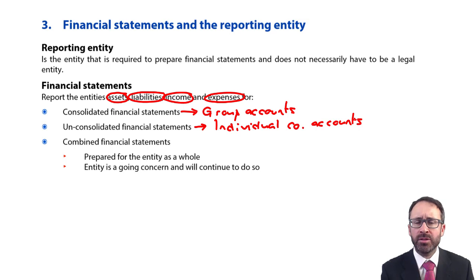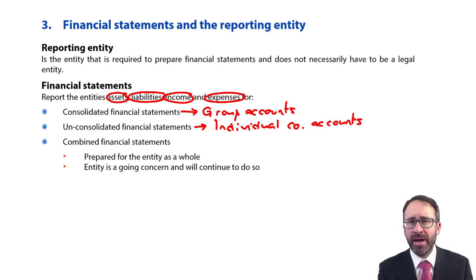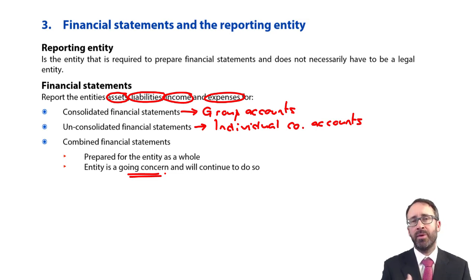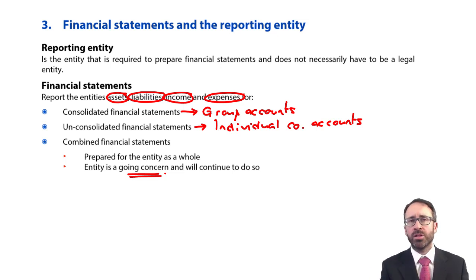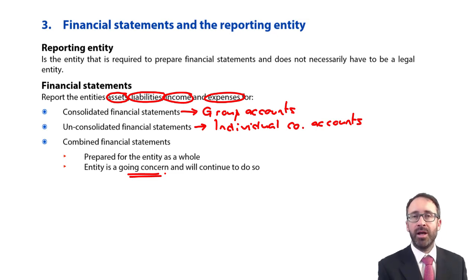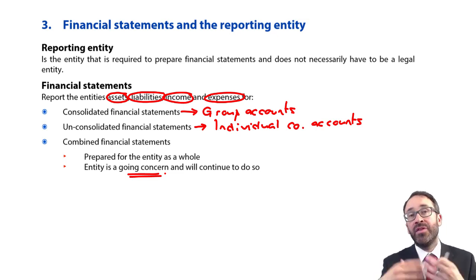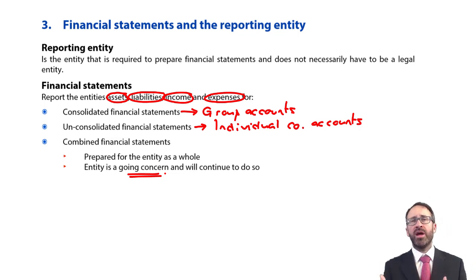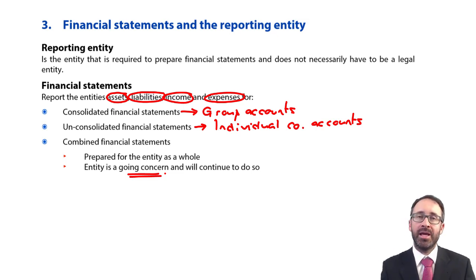Whenever you're preparing any of those financial statements — whether it's for the group accounts, the individual company accounts, or a joint venture — you need to ensure that you are preparing them on a going concern basis. If we're preparing on a going concern basis, we're making the assumption that the entity is able to continue for the foreseeable future, which is longer than a year. That's ultimately why we show within the statement of financial position that split of current and non-current assets, and current and non-current liabilities. The detail is within IAS 1, which specifically says what is current and what is non-current, but the framework is laying the foundations for what we then see within those international accounting standards.